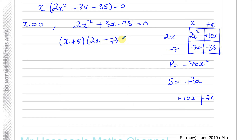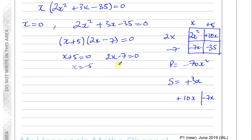So we have (x plus 5)(2x minus 7) equals 0. Either x plus 5 equals 0, giving x equals negative 5, or 2x minus 7 equals 0, giving x equals 7 over 2. Combined with x equals 0, those are the three solutions to this equation.